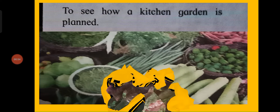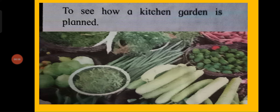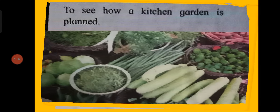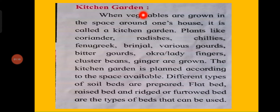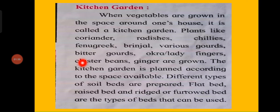Kitchen Gardening. In this, we are going to see how a kitchen garden is planned. When vegetables are grown in the space around one's house, it is called a kitchen garden. Plants like coriander, radishes, chillies, fenugreek, brinjal, various gourds, bittergourds, okra, lady's fingers, cluster beans, and ginger are grown. The kitchen garden is planned according to the space available, and different types of soil beds are prepared.